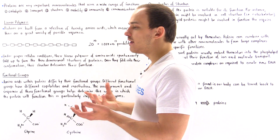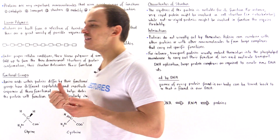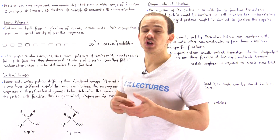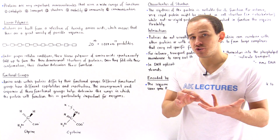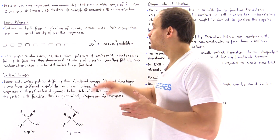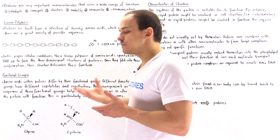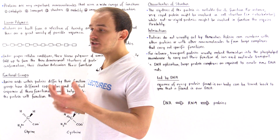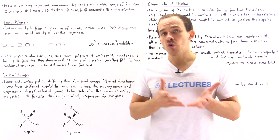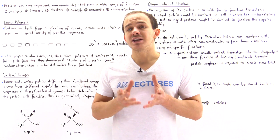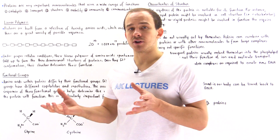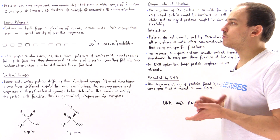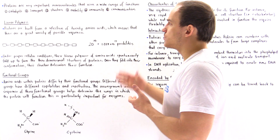Proteins are also involved in protecting our cells and our body from different types of pathogenic agents. Antibodies and antigens consist of proteins. Proteins are also involved in communication. For instance, we have molecules known as hormones — peptide hormones — that are involved in intracellular and cell-to-cell communication, and we'll discuss that much more in future lectures.